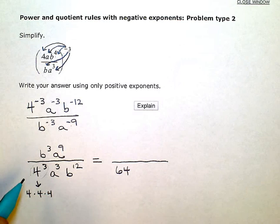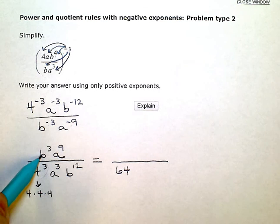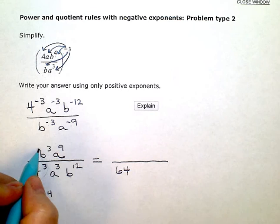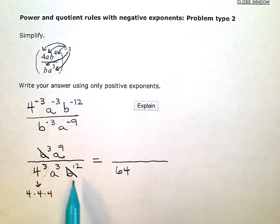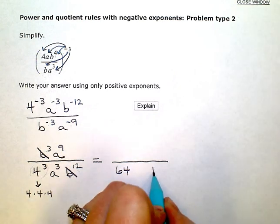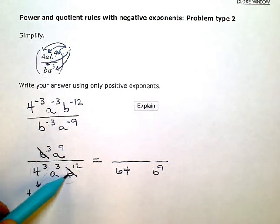Now I have b's in the numerator and the denominator. I have three factors of b in the numerator and twelve factors of b in the denominator. When I have the same base, the quotient rule says that I can subtract these exponents. So, since I have more factors, twelve factors of b in the denominator, I'm going to do twelve minus three, which is nine, and I will have nine factors of b left in the denominator. Three up here canceled with three down there, and I was left with nine in the denominator.